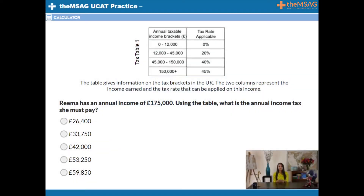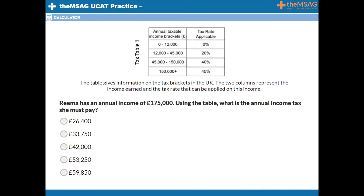Question 2. Rima has an annual income of £175,000. Using the table, what is the annual income tax she must pay? This income falls into the £150,000 plus category. But by how much?